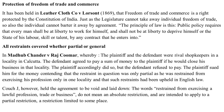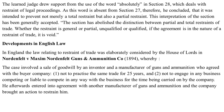Justice Couch held the agreement to be void, laying down that the words 'restrained from exercising a lawful profession, trade or business' do not mean only an absolute restriction — they are intended to apply to a particular or partial restriction limited to some place. He drew support from the use of the word 'absolutely' in Section 28 (restraint of legal proceedings); since that word is absent from Section 27, it was intended to prevent not only total restraint but also partial restraint. This interpretation has been generally accepted. Section 27 has abolished the distinction between partial and total restraints — whether general or partial, qualified or unqualified, if the agreement restrains trade, it is void.